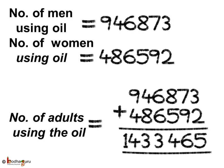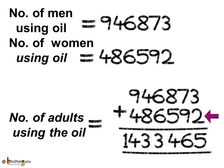Let us see again how we solve this problem. Number of men who use this oil is equal to 9,46,873. Number of women using oil is equal to 4,86,592. So the total number of adults who use that oil is 9,46,873 plus 4,86,592, which is equal to 14,33,465. The total number of adults who use that oil is equal to 14,33,465.